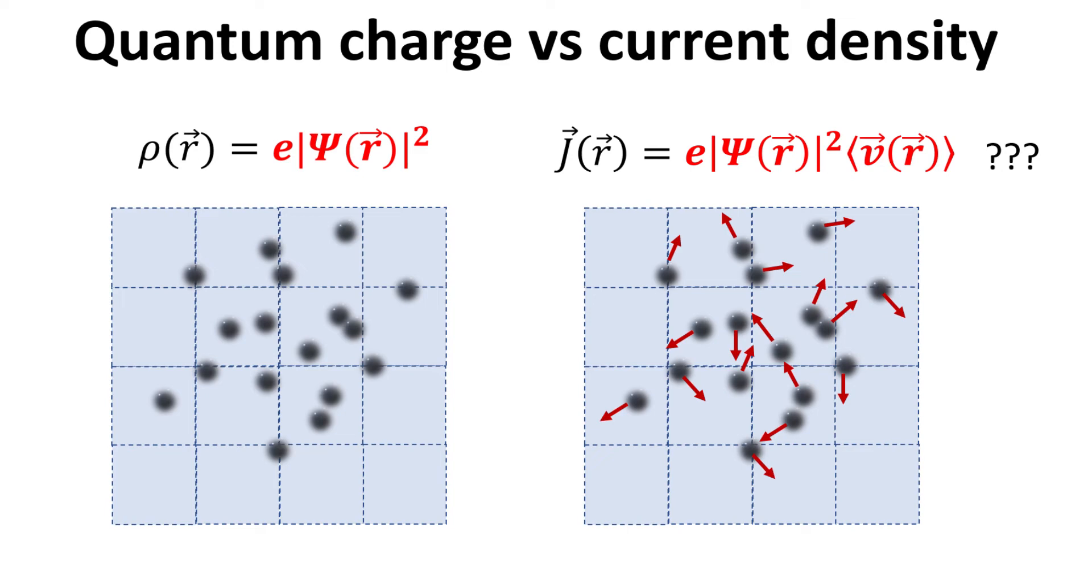How about the quantum analogous expression for the current density? Loosely speaking, we know it should be a function of the wave function and some expectation value of the velocity. Let's proceed to work out the exact expression.